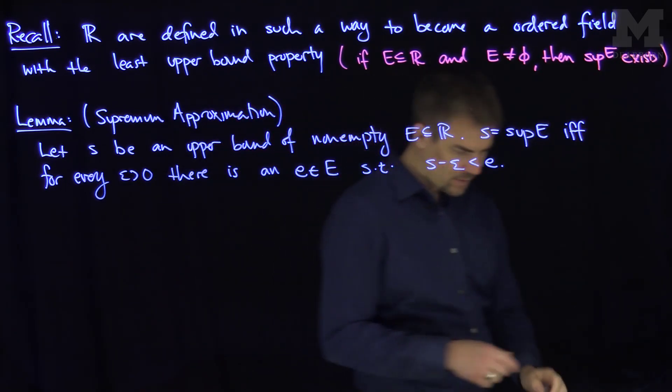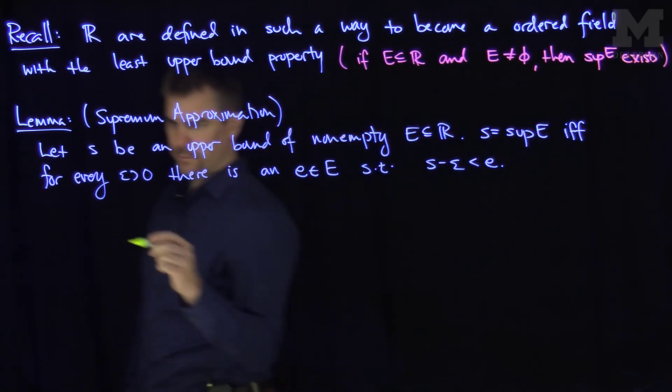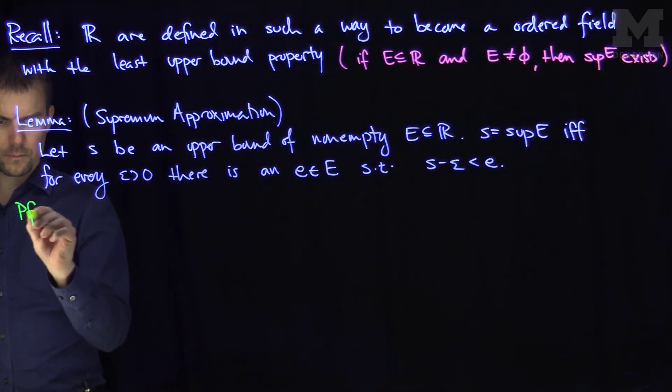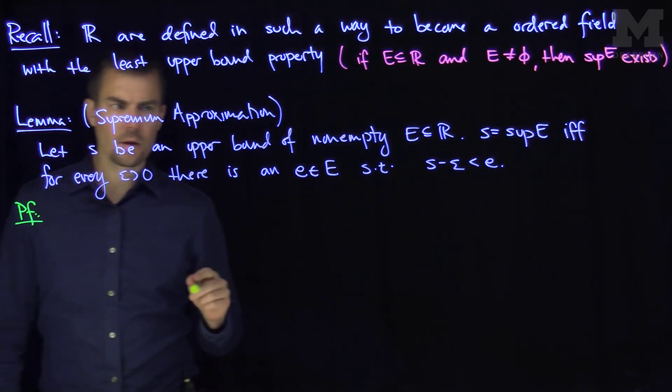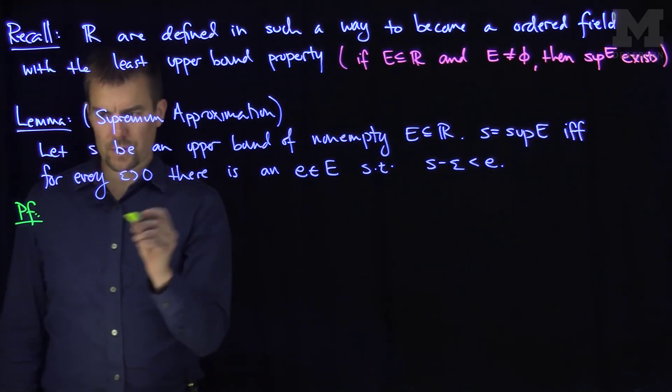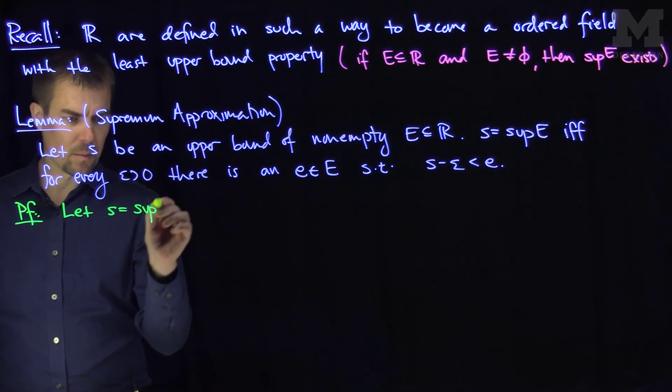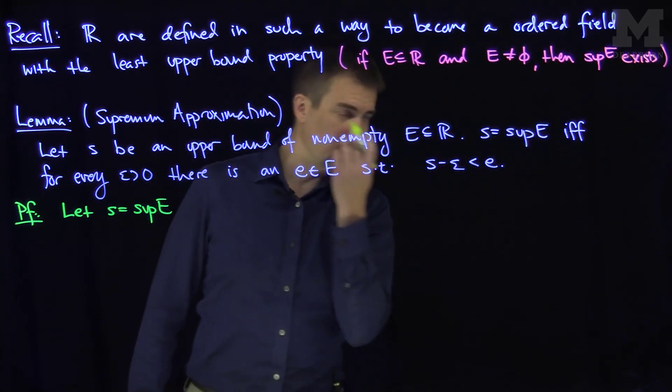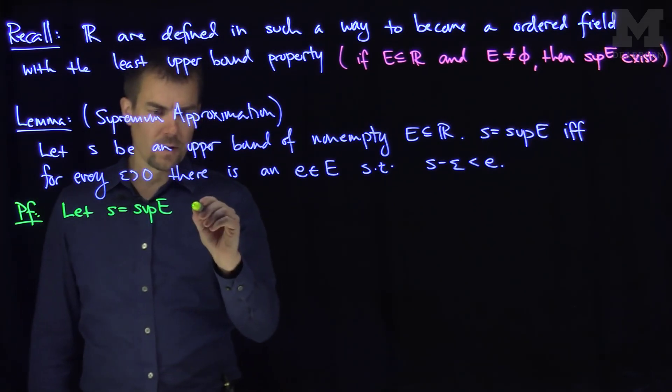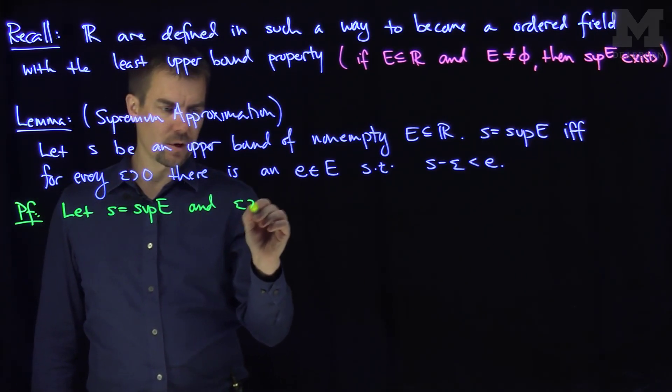So let's prove this result. Let S be the supremum of E. We're going to assume that S is the supremum of E and show this property is true. Let epsilon be greater than zero.